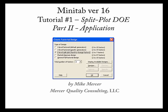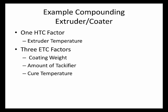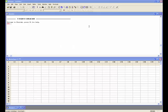Hello and welcome. This is Mike Mercer from Mercer Quality Consulting, bringing you part two in our training on split plot experiments. In part one we learned about the nature of split plot experiments, especially when used with restricted randomization. In this video I'll discuss how to design and analyze split plot experiments using Minitab. We'll take up the example of the compounding and coating line, where the hard to change factor is extruder temperature, and the three easy to change factors are coating weight, amount of tackifier, and cure temperature.